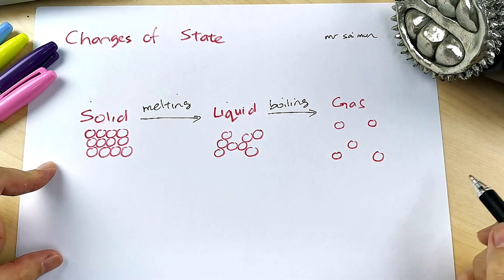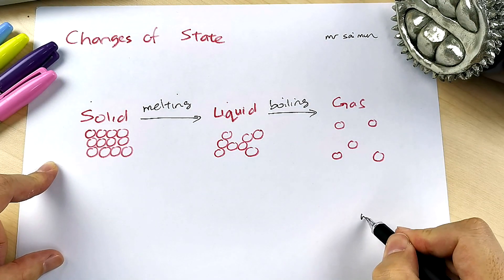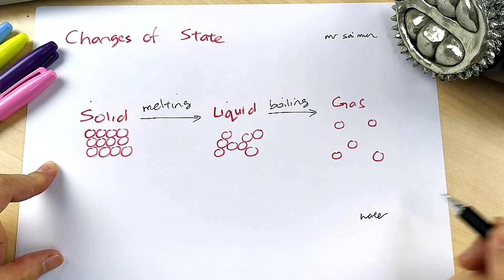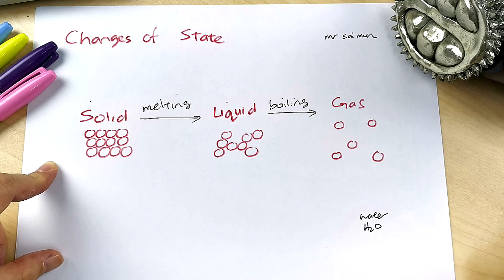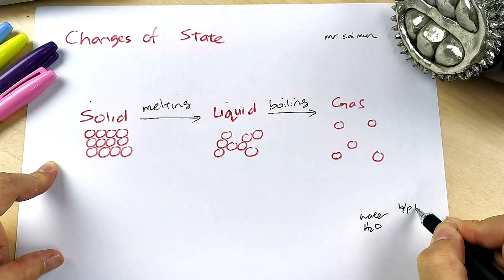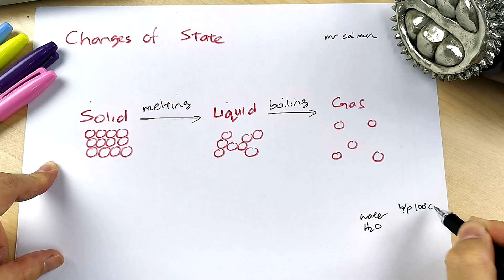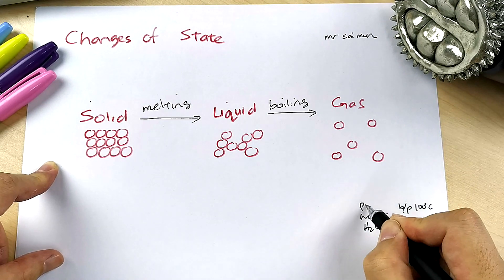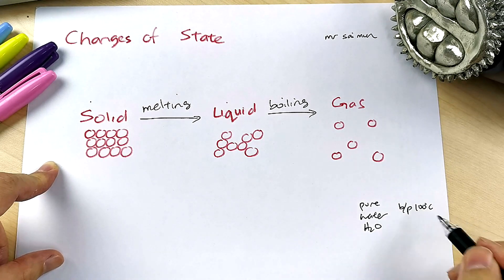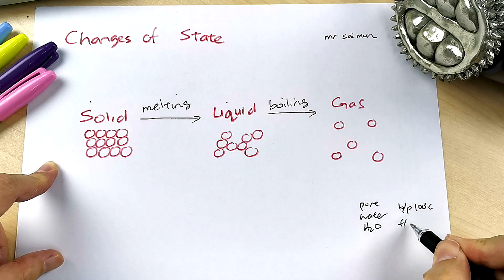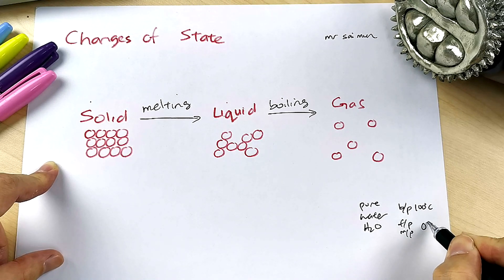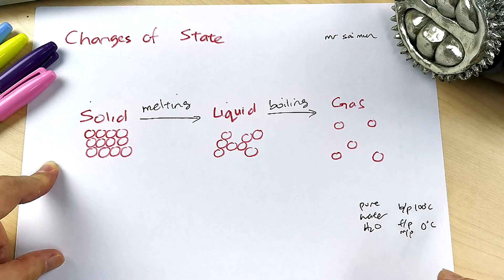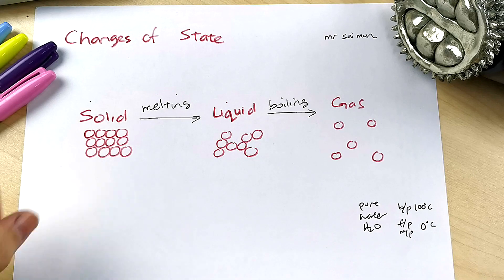Revising water — H₂O — the boiling point is 100°C for pure water, and the freezing point or melting point is the same: 0°C. As a chemistry student, you have to know this.